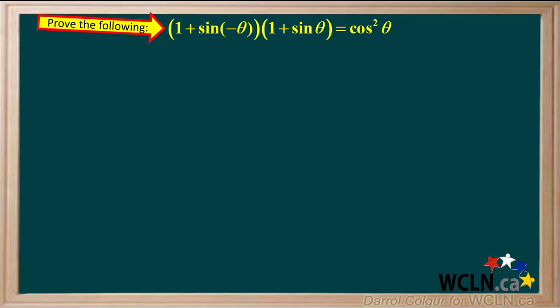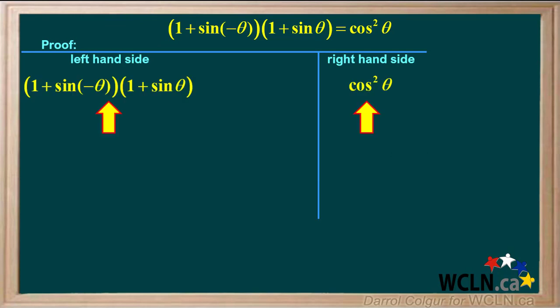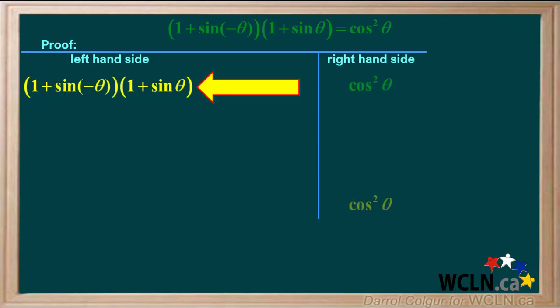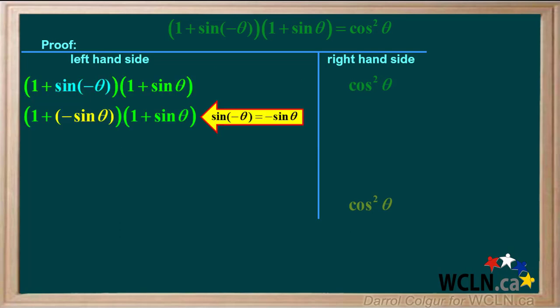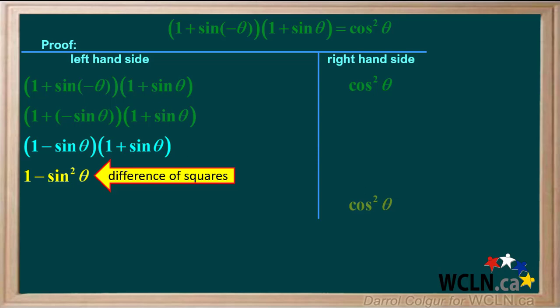Let's do an example. We're asked to prove that 1 plus sine of negative theta, times 1 plus sine theta, is equal to cosine squared theta. We'll set up a table for the proof. The expression on the left-hand side is 1 plus sine of negative theta times 1 plus sine theta, and the right-hand side is cosine squared theta. We can use the negative angle identity: sine of negative theta equals negative sine theta, giving us 1 minus sine theta times 1 plus sine theta, which simplifies to a difference of squares: 1 minus sine squared theta.